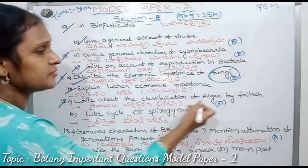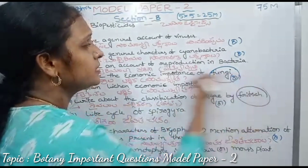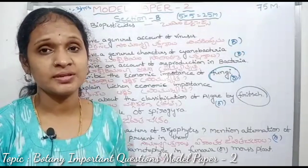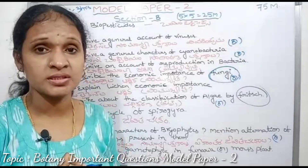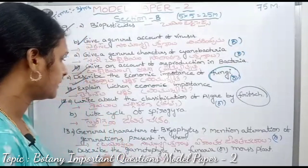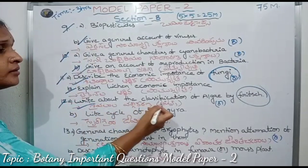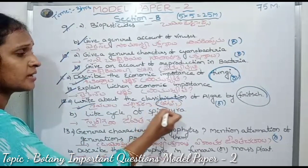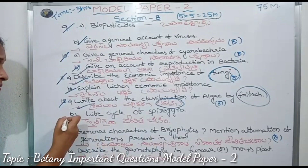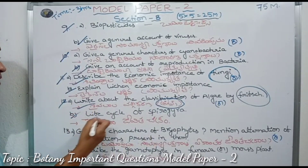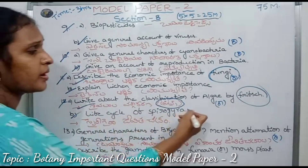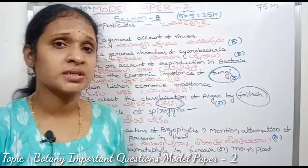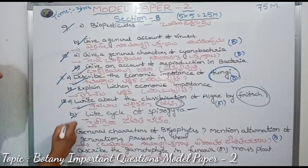Write about the classification of algae by Fritsch. Algae have already been classified by Fritsch — Fritsch's classification. This includes the life cycle of Spirogyra, which you need to explain.